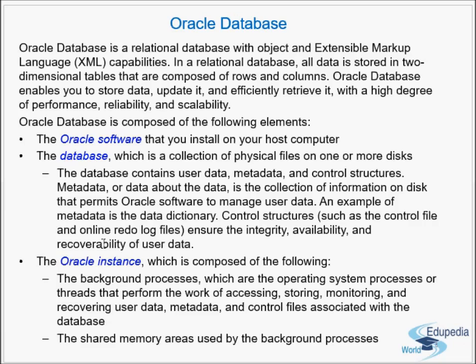Control structures such as the control file and online redo log files ensure integrity, availability, and recoverability of user data. When I say 'Oracle database,' it refers to the physical files on the disk — it's the collection of physical files. These files contain user data, metadata, and control structures. Metadata is the data that Oracle software uses to manage user data, and the data dictionary is an example. Control structures include the control file and the online redo log files.